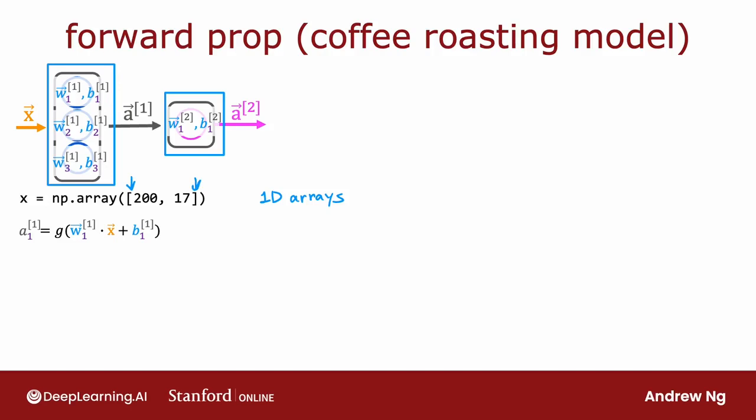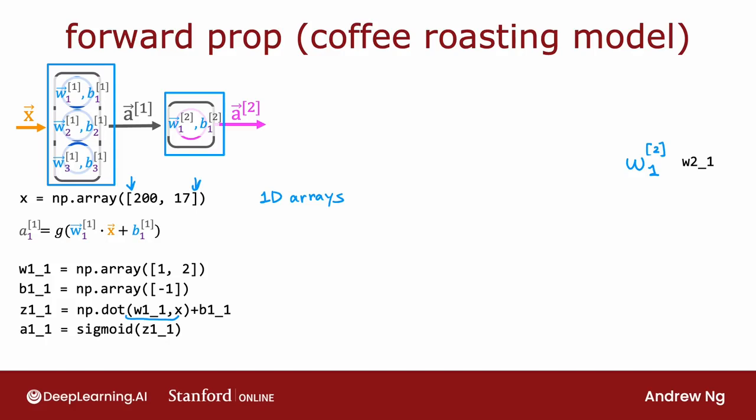I'm going to use the convention on this slide that a term like w2_1, I'm going to represent as a variable w2 and then subscript 1. This underscore 1 denotes subscript 1. So w2_1 means w superscript 2 in square brackets and then subscript 1. To compute a1_1, we have parameters w1_1 and b1_1, which are, say, 1, 2, and negative 1. Then you would compute z1_1 as the dot product between that parameter w1_1 and the input x and add it to b1_1. And then finally, a1_1 is equal to g, the sigmoid function applied to z1_1.